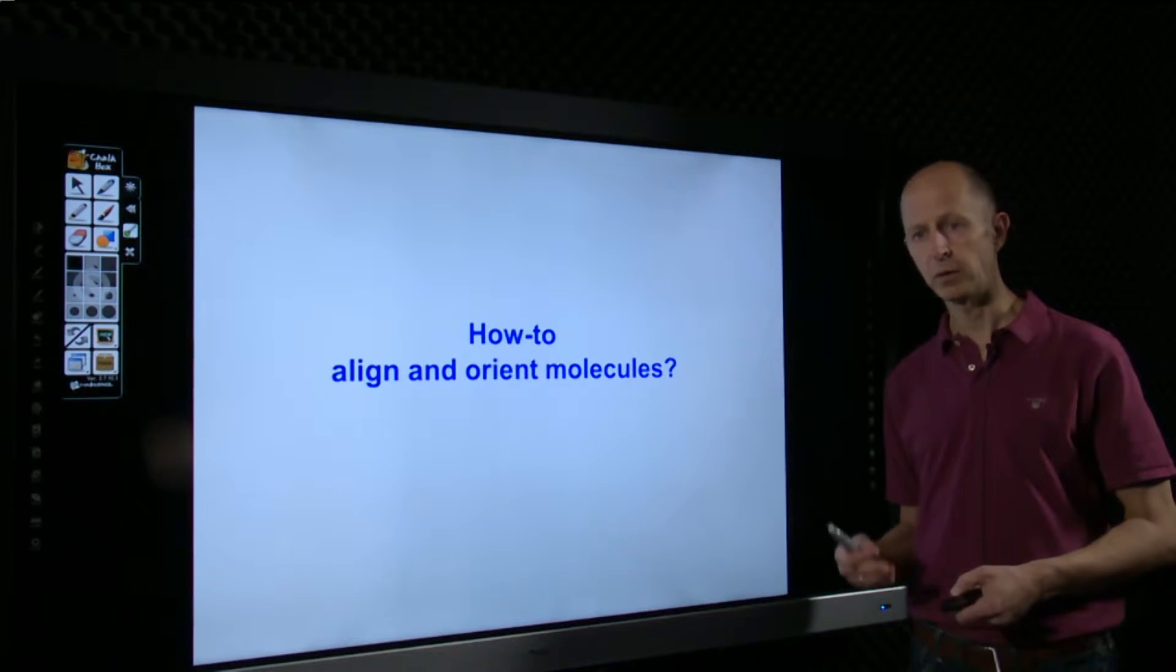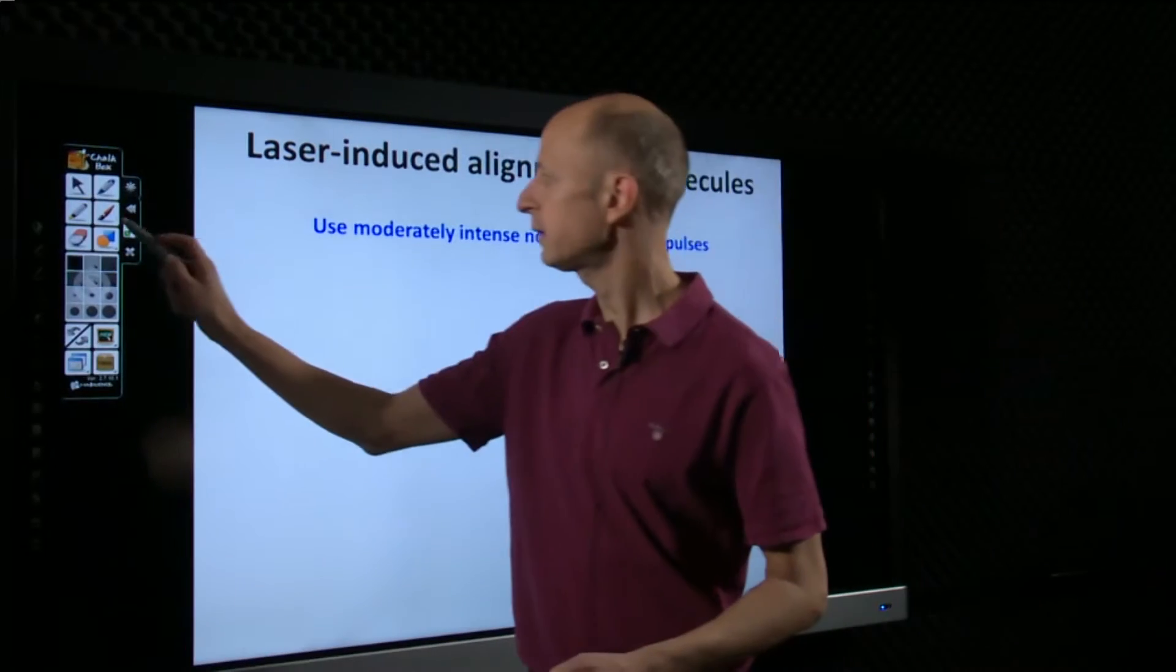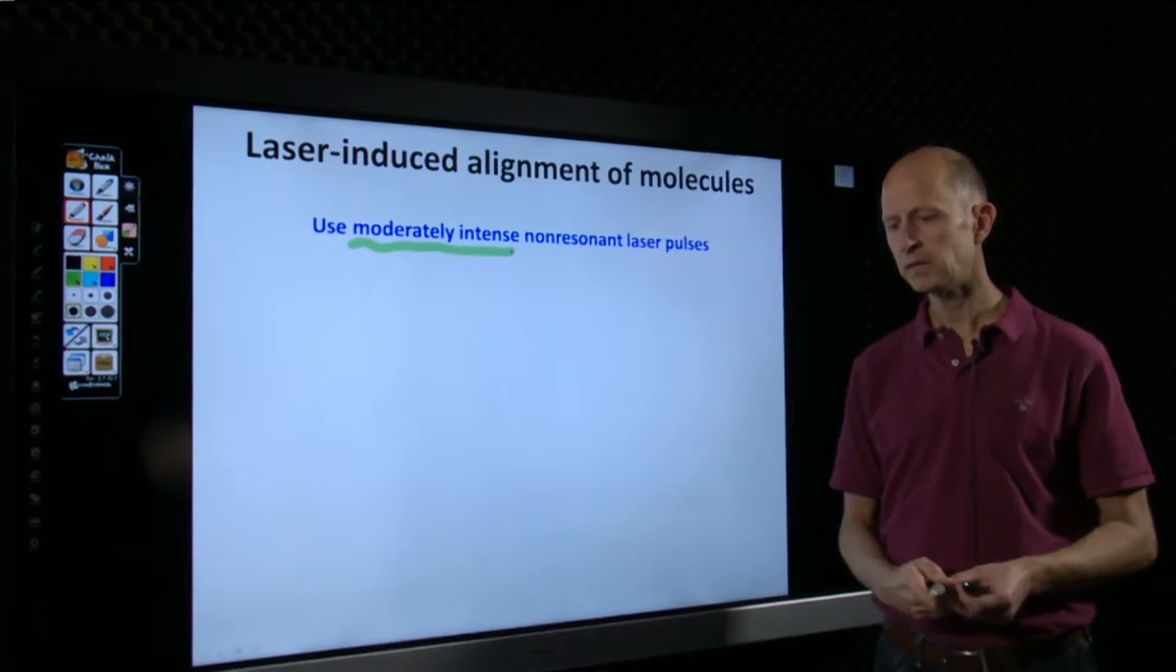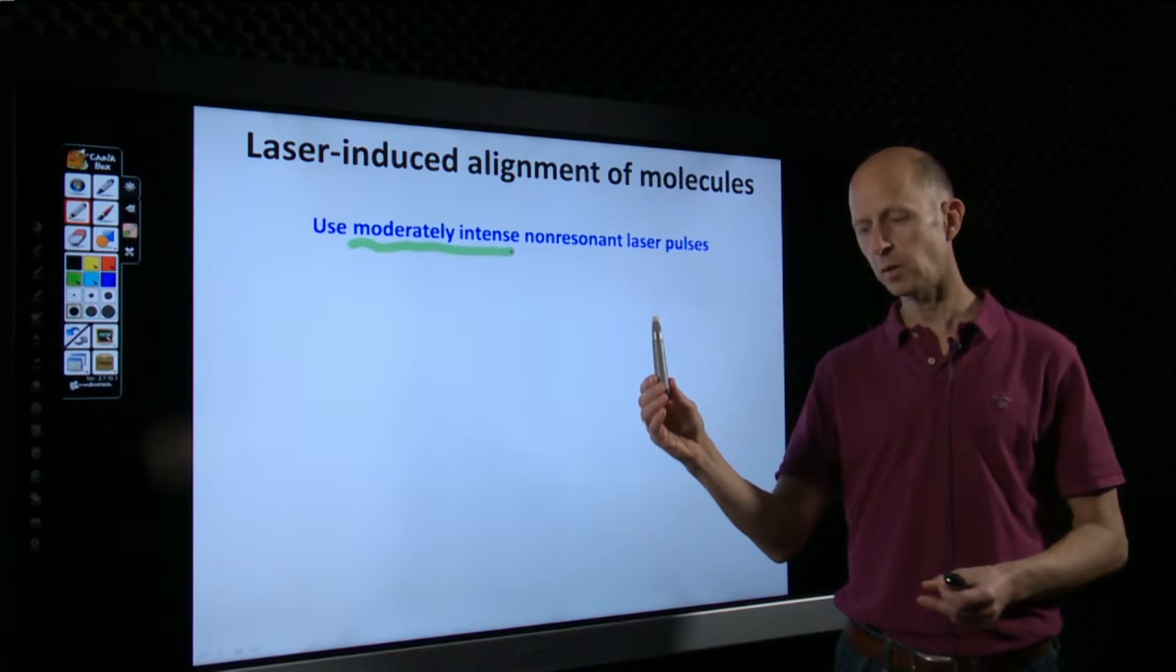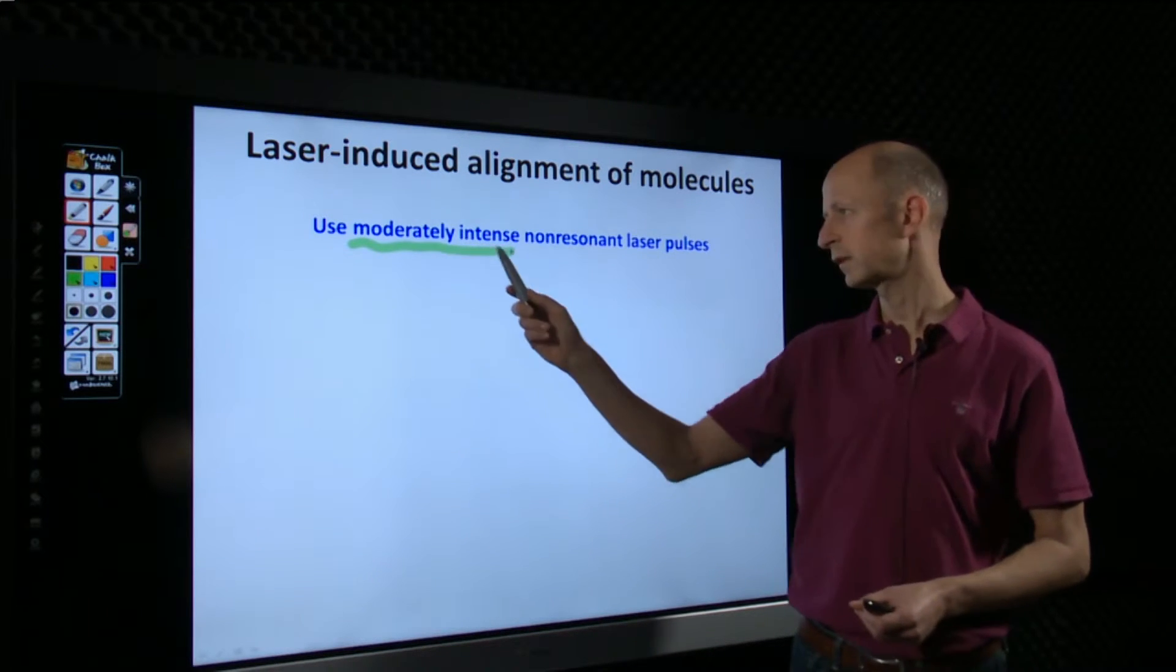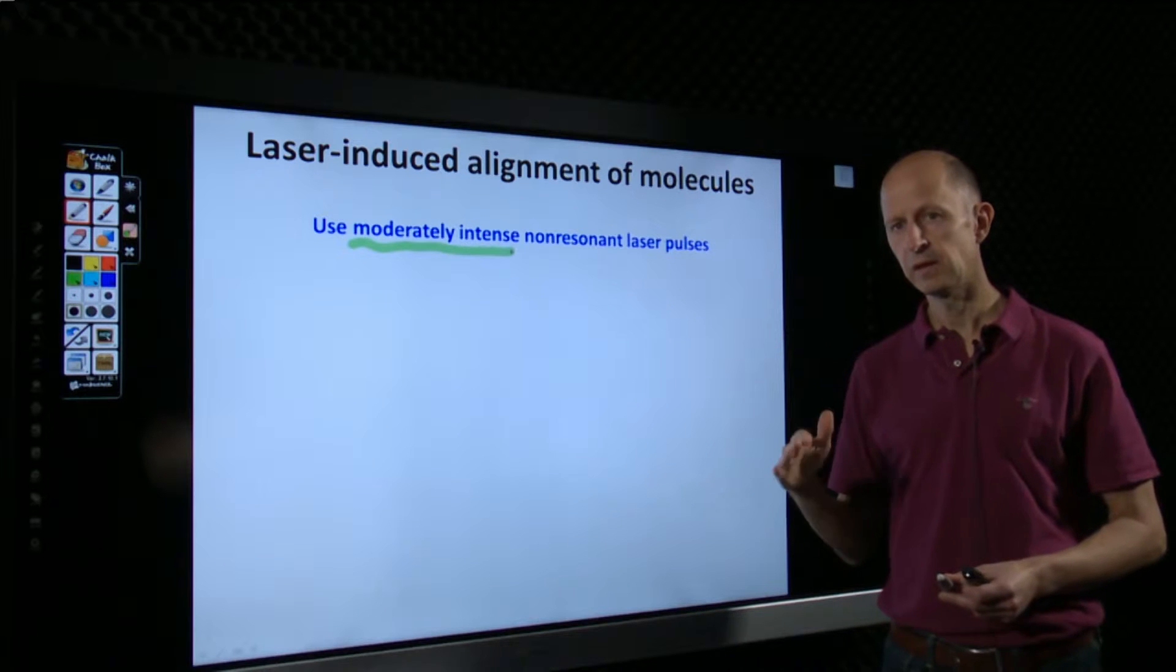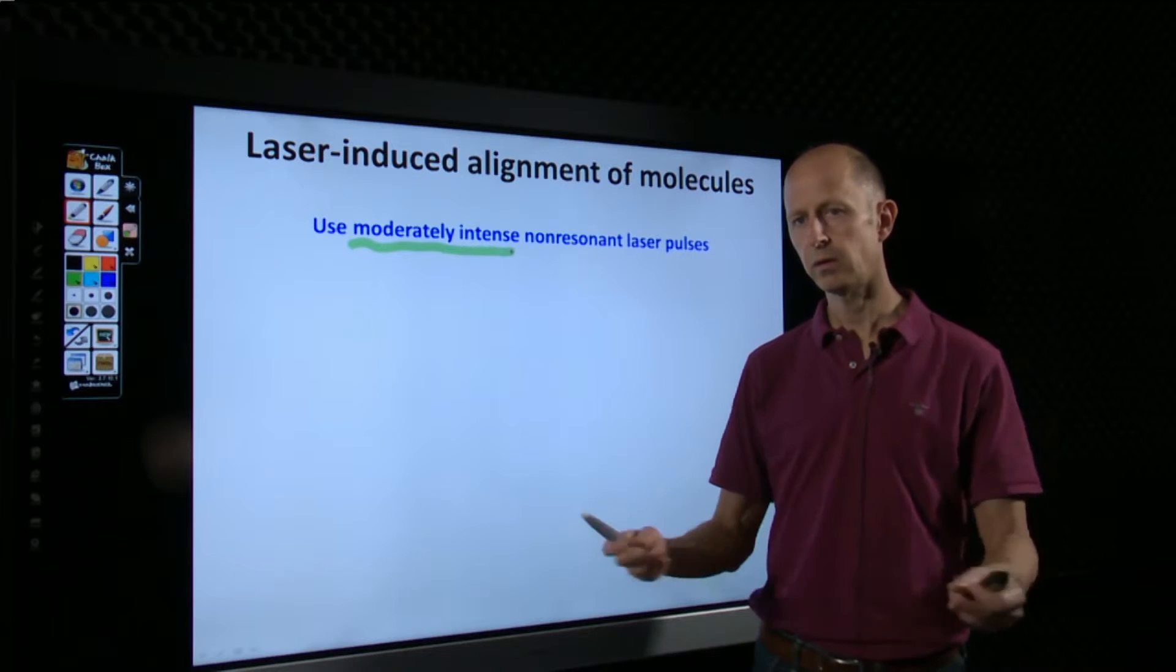So, how do we align and how do we orient molecules? Well, what you need, ideally, is you need moderately intense laser pulses that are non-resonant. Moderately intense means that the laser pulse should be sufficiently intense that it can induce a dipole moment in a molecule which then becomes aligned. Yet, it shouldn't be too intense, and therefore I use the word moderately to emphasize that the laser pulse should stay below an intensity such that it doesn't ionize or fragment the molecules, because we don't want the molecule to be destroyed or undergo any reaction.